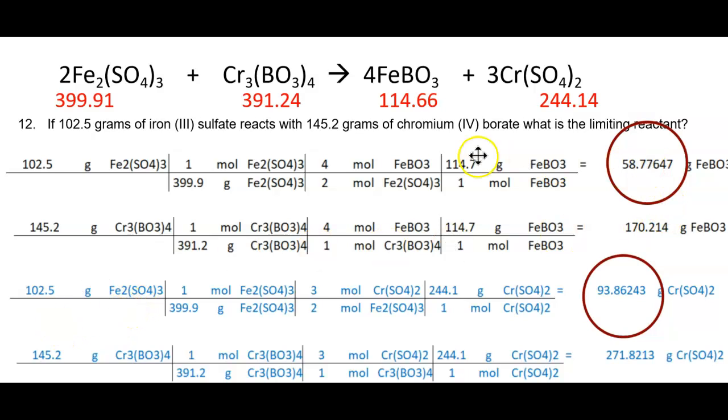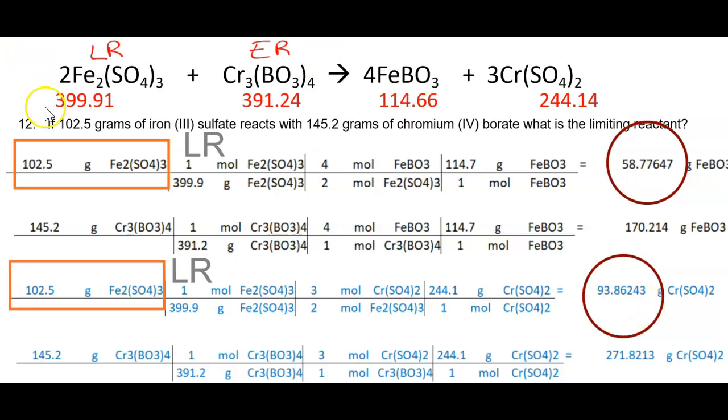So both of these tell us that the least amount is produced here for iron borate. And if I start with these, the same two starts, but go to chromium sulfate, 93.86 is the least amount. So therefore, we know the limiting reactant in both cases is iron sulfate.